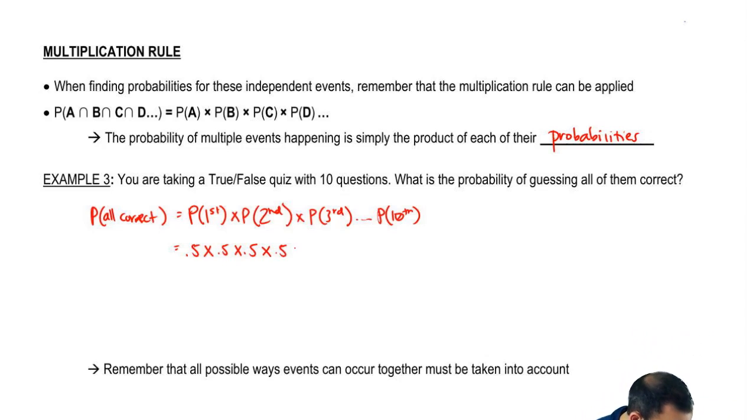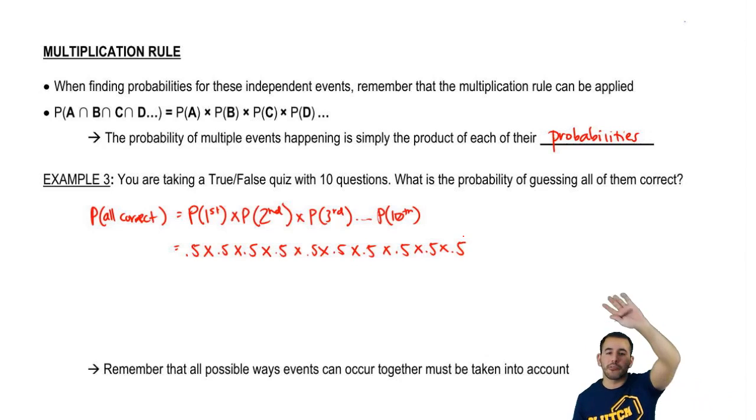And so multiply 0.5 ten times: 1, 2, 3, 4, 5, 6, 7, 8, 9, and 10. But this gets very annoying. If we're talking about a long string of events, this could get really tedious to write it over and over again. So the way we do this to make it simpler for ourselves is 0.5 to the tenth power.